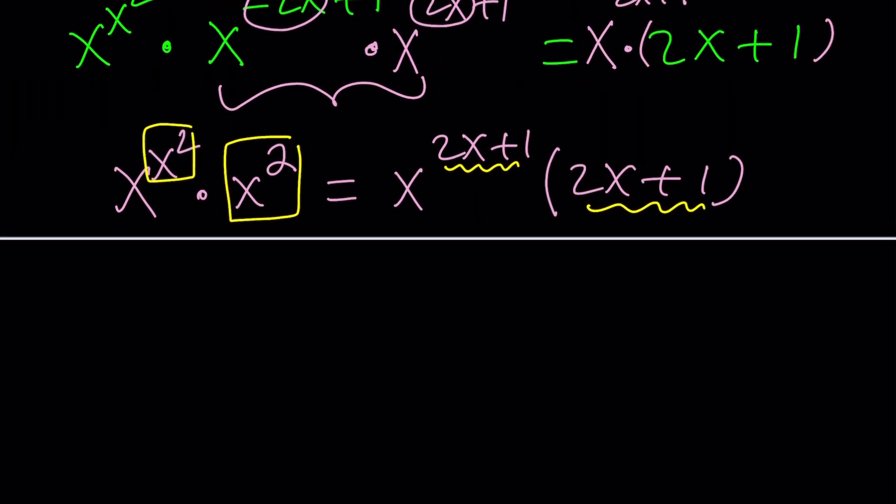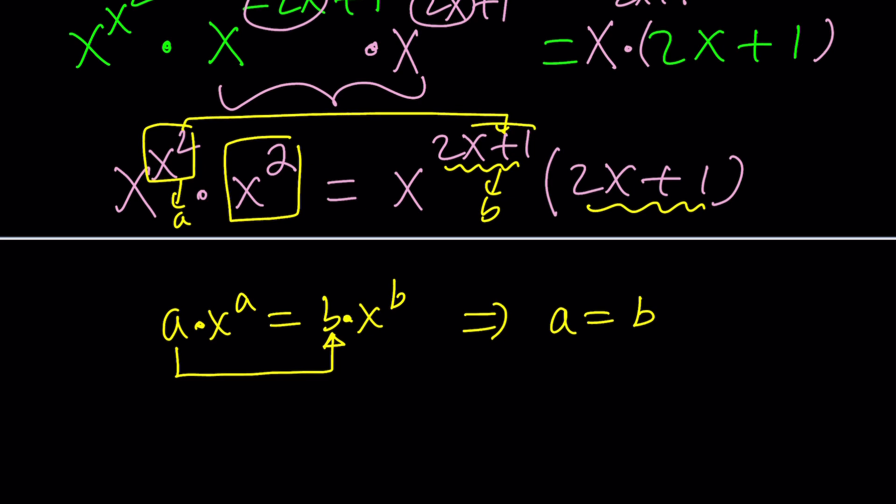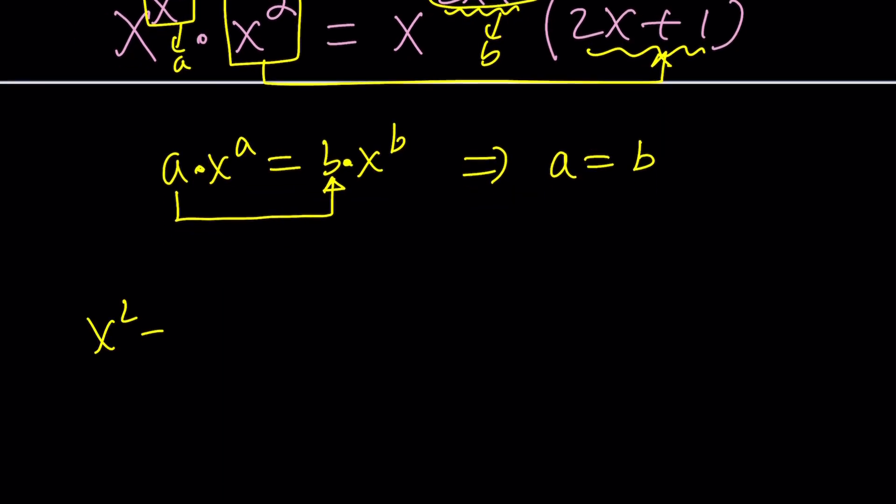So actually here, we don't even need that function. You know why? Because we have perfect one-to-one correspondence. Think about it this way. Let's call this a and let's call this b. So we have something like a times x to the a equals b times x to the b. This implies, at least for one of the solutions, a equals b. If you replace a with b, you get the right-hand side. So from here, what do we conclude? We conclude that x squared is supposed to equal to 2x plus 1. And that is verified by this. In other words, if x squared is equal to 2x plus 1, we have a solution. Houston, we have a solution.